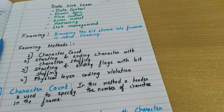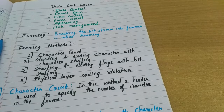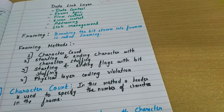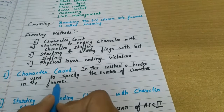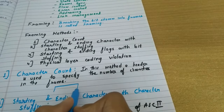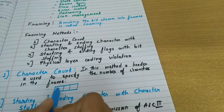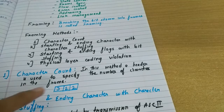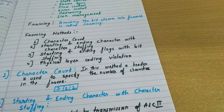The first method is character count. In this method, a header is used to specify the number of characters in the frame. For example, if a frame has three characters, the header will contain the value three, indicating there are three characters in that frame.